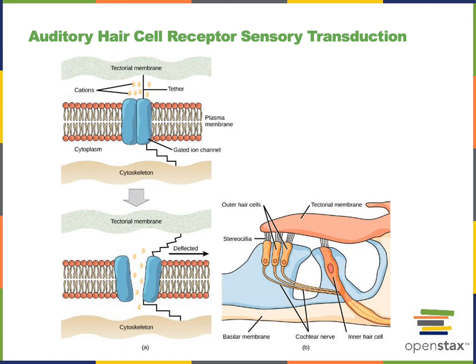An interesting detail about this transduction mechanism is that the cations that enter the auditory hair cells through the mechanically gated ion channels are potassium ions. This is unusual, as potassium entering a cell by facilitated diffusion only occurs here because the auditory hair cells are surrounded by endolymph fluid that has an extremely high potassium concentration. So there is a higher concentration of potassium outside of the auditory hair cells compared to the cytosol, enabling potassium to enter the auditory hair cells and produce depolarization.